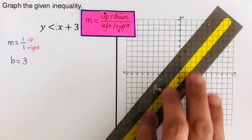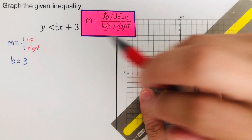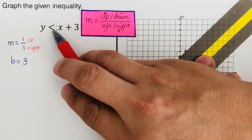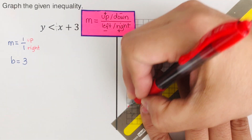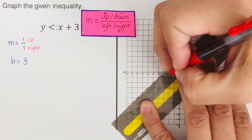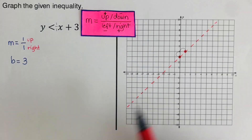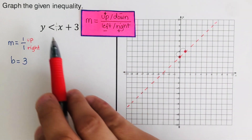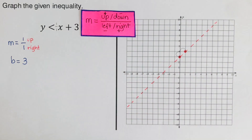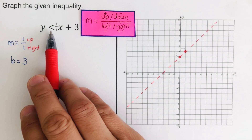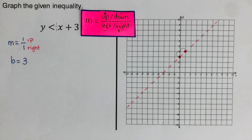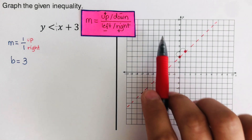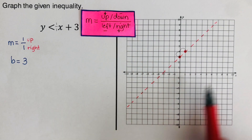Since this is a less than symbol, we are going to use a broken line. This is a broken line because there is no bar underneath the inequality symbol. If there were a bar underneath, it would have been a solid line.